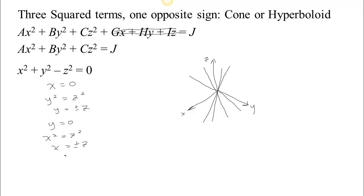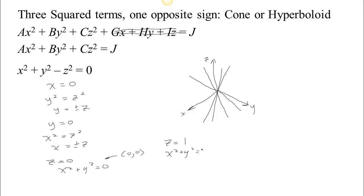What are the traces when we set z equal to zero? Well, if we set z equal to zero, we get x squared plus y squared equals zero, which is a single point — the only solution is to make x and y both zero, because both terms are positive. But we could also look at what happens if z equals one. Well, if z equals one, then we have x squared plus y squared equals one, so up here in the plane where z equals one, we're seeing a circle.